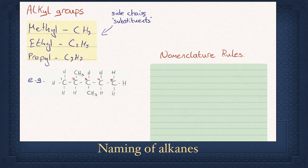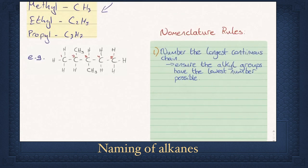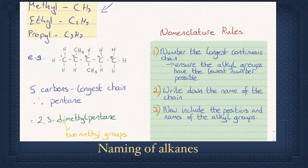Let's look at an example. You are asked to name a compound. We must follow the nomenclature rules. Step 1: number the longest continuous chain of carbons while ensuring the alkyl groups get the lowest number possible. If we count from left to right, the methyl groups would be numbered 2 and 3. Or if you count from right to left, the methyl groups would be 3 and 4. Therefore we count left to right. Step 2: once we have the longest continuous chain, we now have the name for the end of the compound — in this case it is pentane. Step 3: label the position of the two methyl groups, which are on carbon 2 and carbon 3. We include 'di' because there are two of the same alkyl group.